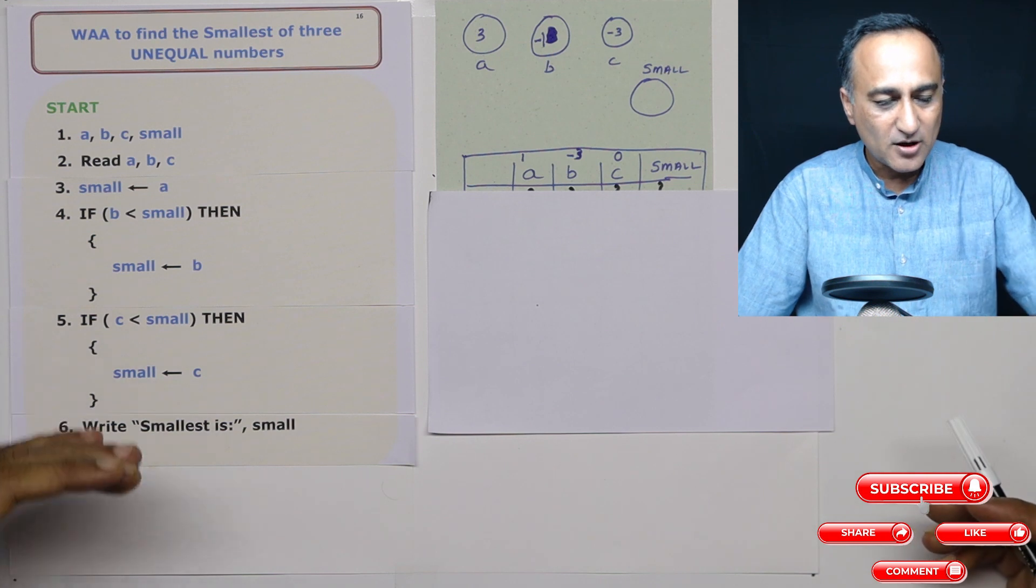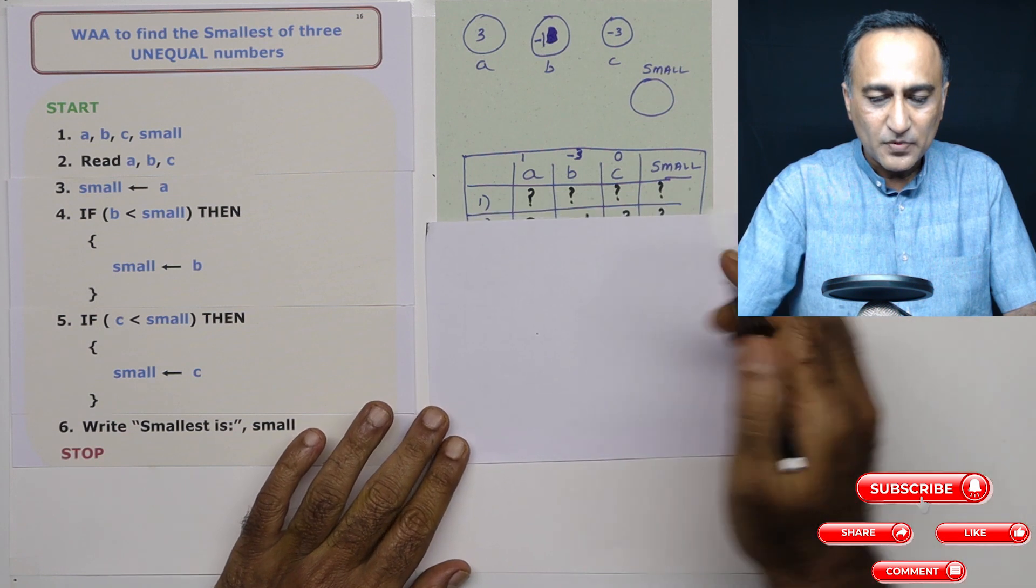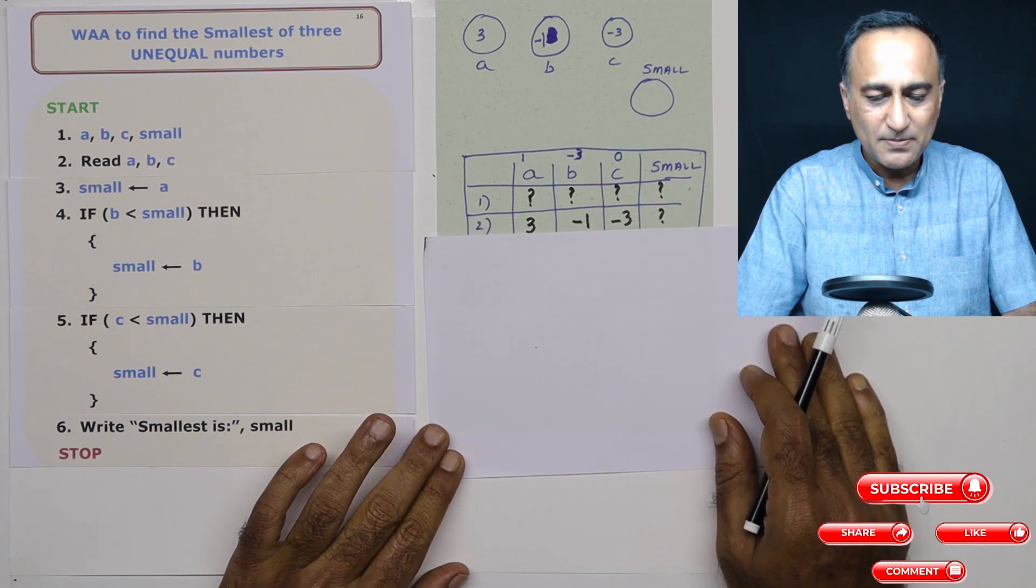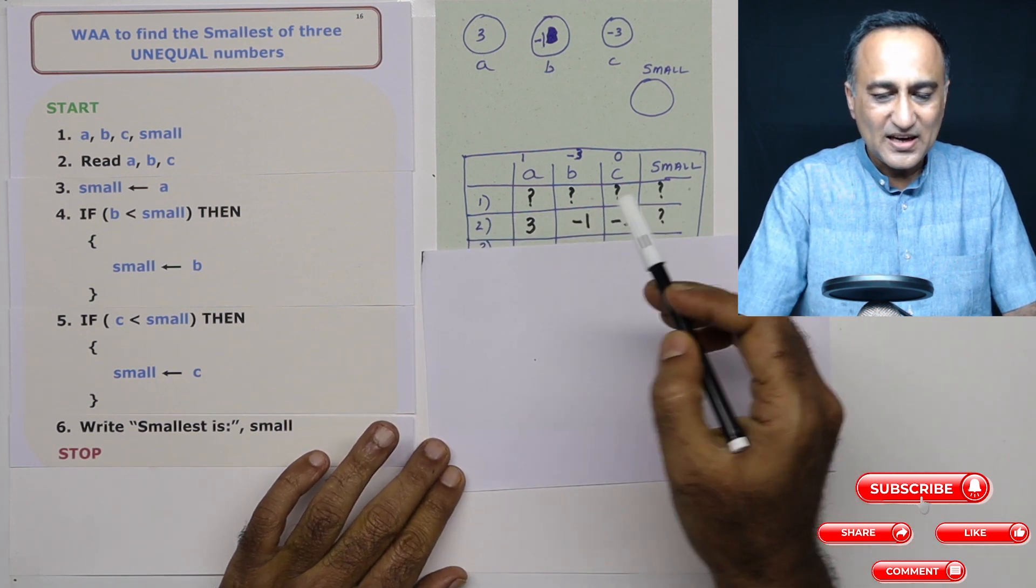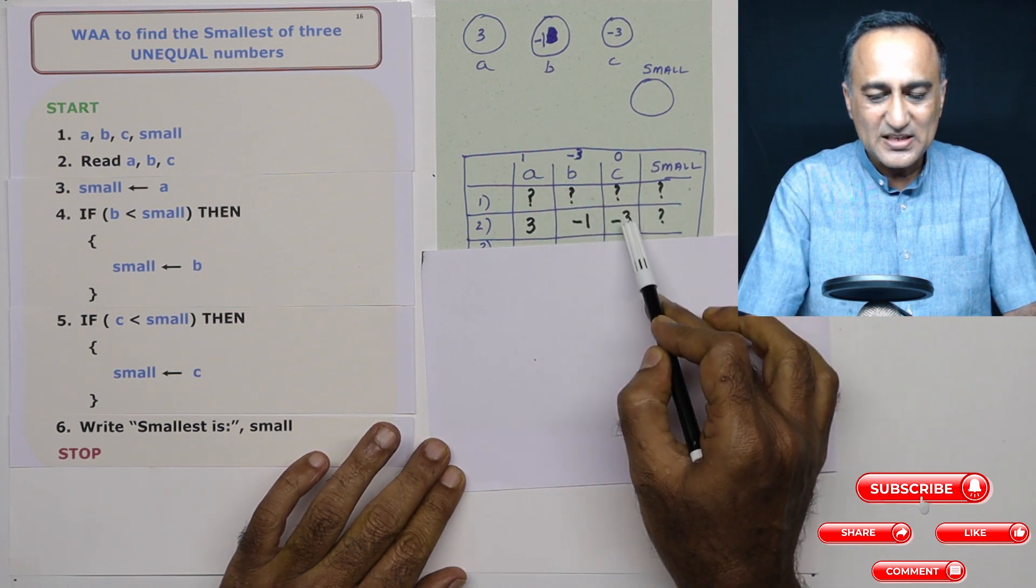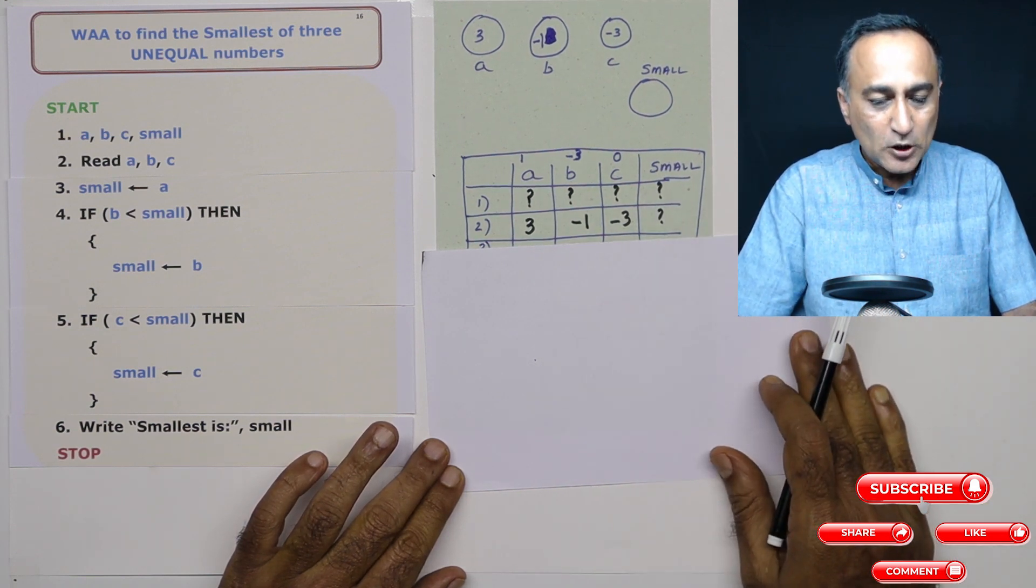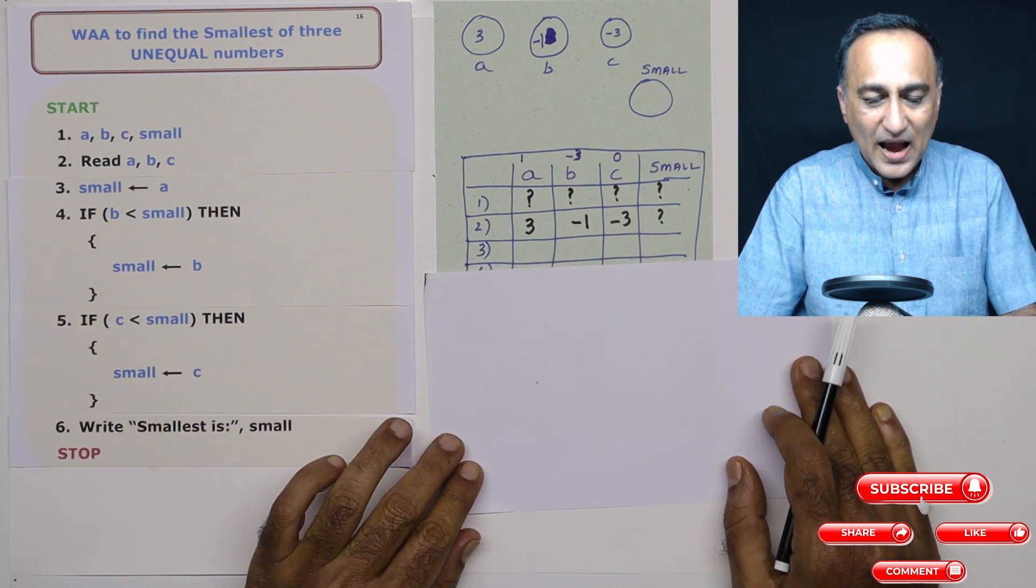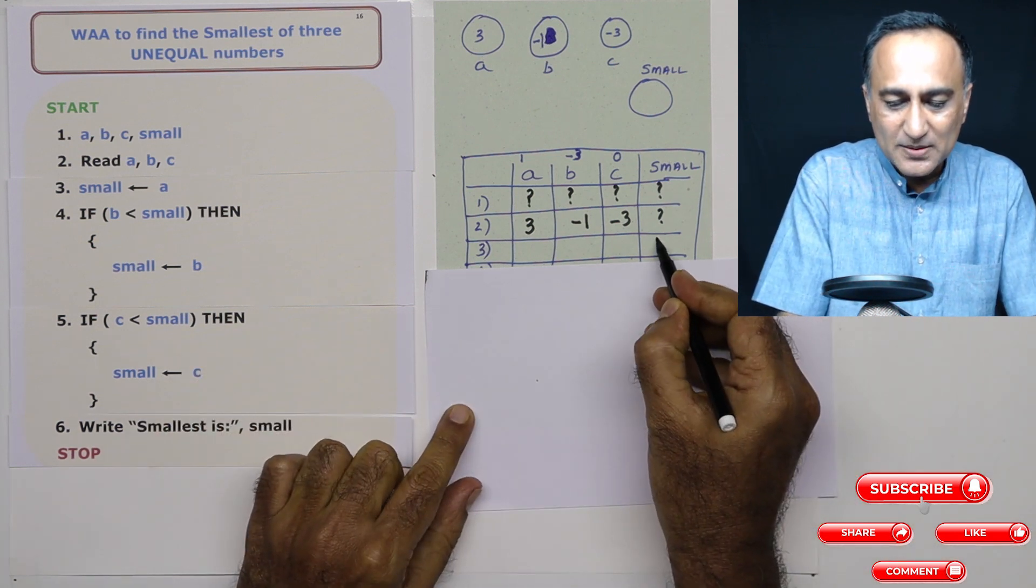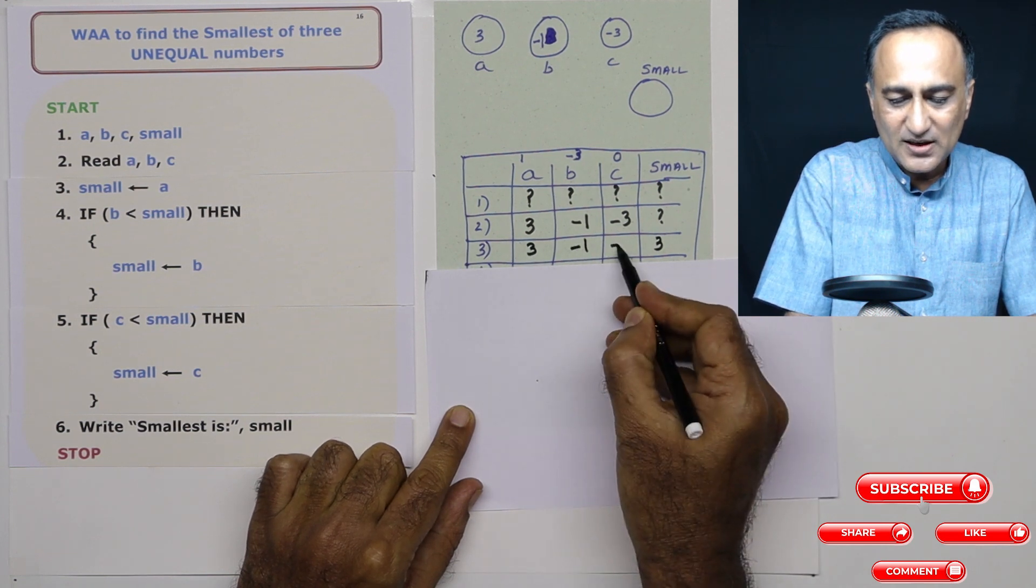As usual, we do not trust our logic without doing a testing or a dry run. Step number 1, all of these values are unknown to us. That's why I have put a question mark. Step number 2, let's say I read 3, minus 1, and minus 3. So a is 3, b is minus 1, c is minus 3, and I do not know what is contained in small. I don't care. Now in step number 3, I am going to assume the value of a as the smallest. So small now becomes 3. Nothing has changed here. These fellows still remain the same.